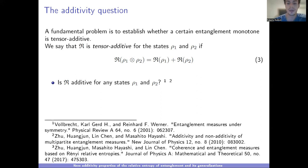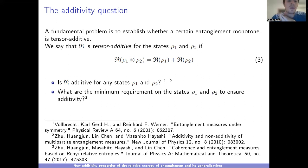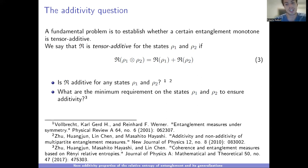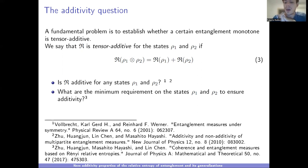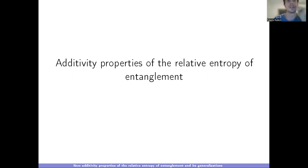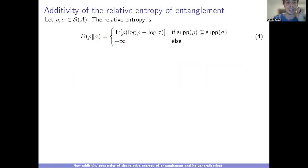Is R additive for states ρ₁ and ρ₂? This is not true for many monotones — it was already known for relative entropy of entanglement about 20 years ago and for generalized robustness. What I'm interested in is: what are the minimum requirements on states ρ₁ and ρ₂ to ensure additivity? Existing results are partial or require constraints on both states. I look for conditions constraining only the first state while still ensuring additivity.